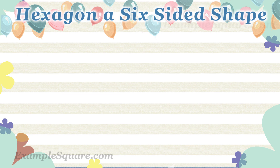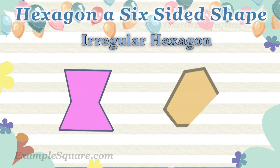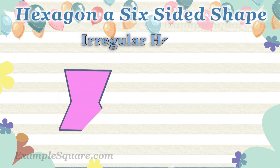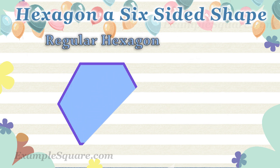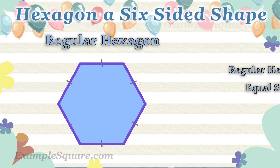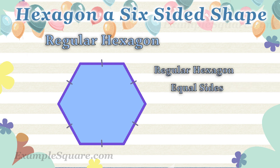These are examples of an irregular hexagon, as the sides and angles are not equal. This is an example of a regular hexagon. All the sides of a regular hexagon are equal and all the interior angles are also equal.